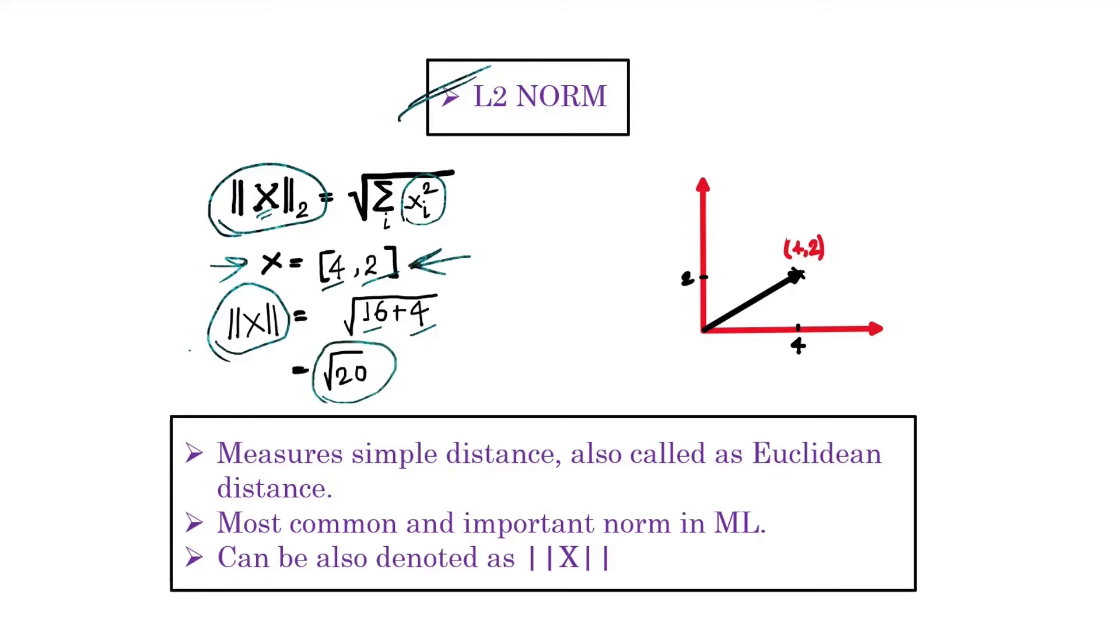A couple more things to remember about L2 norms: it simply measures the distance, which is also called Euclidean distance. As we can see on the plot, this is the distance calculated by the L2 norm. This distance is also called the Euclidean distance.